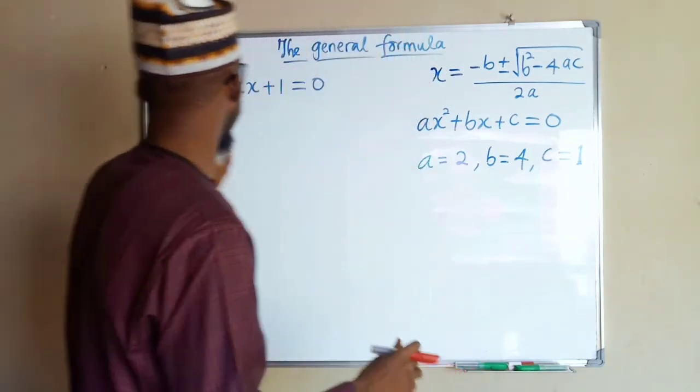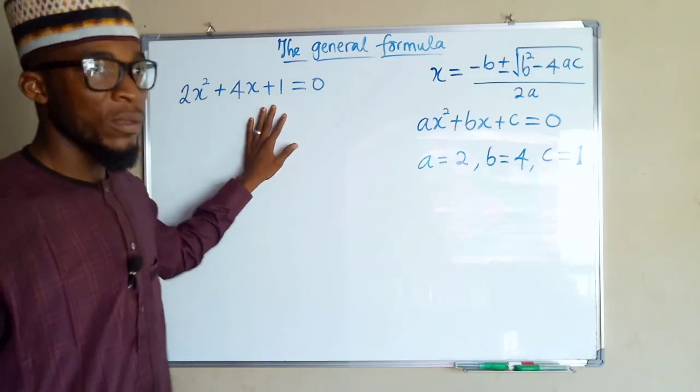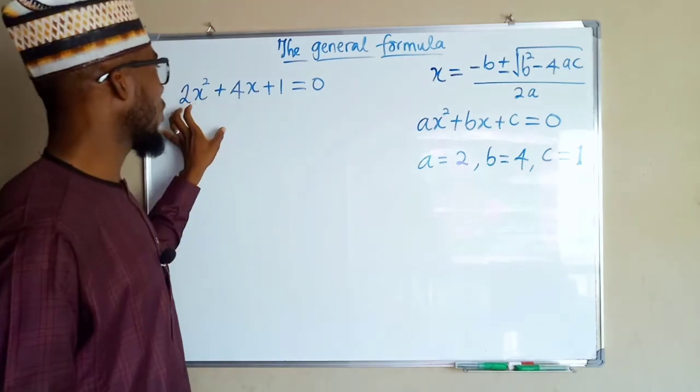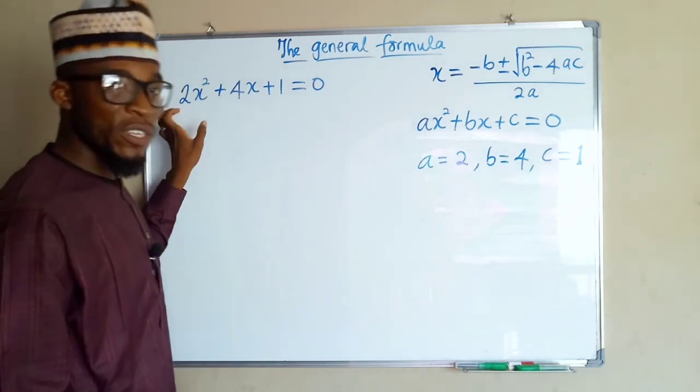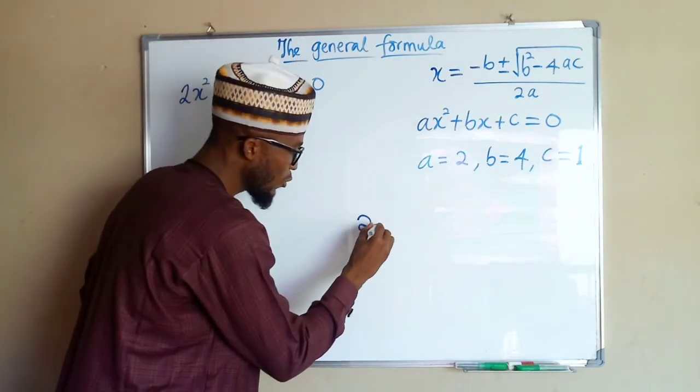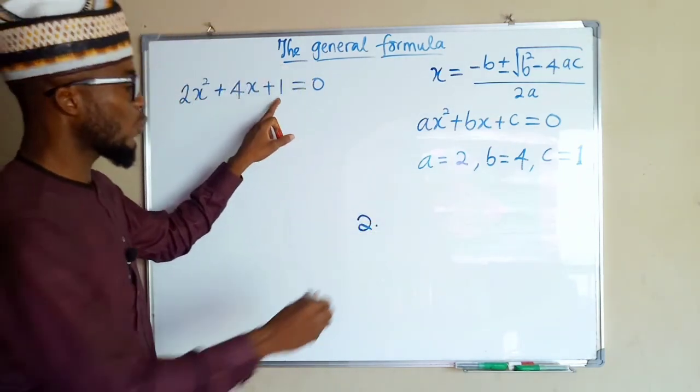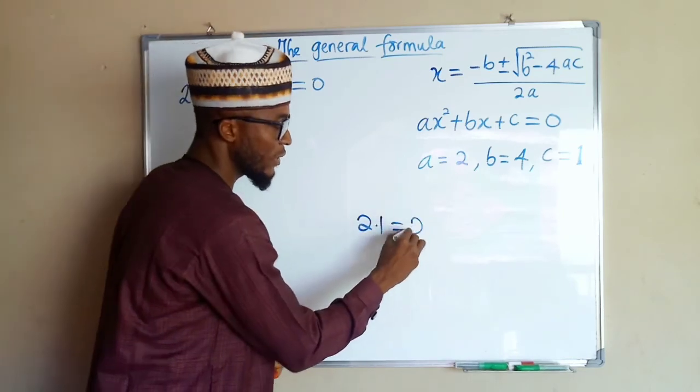For example, we have a quadratic equation here. Absolutely, you cannot factorize this because the leading coefficient is 2. If you multiply it with the constant term, which is 1, you will obtain 2.